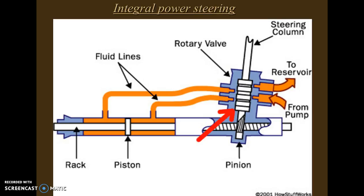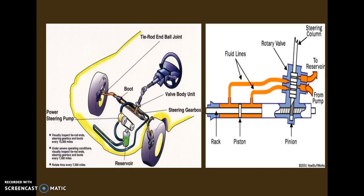This diagram shows the fluid lines of a power steering system. The linkage of power steering shows fluid lines, rotary valve, steering column, and a hydraulic circuit connected to a reservoir and pump. The rack, piston in the cylinder, and pinion are also visible in the diagram.